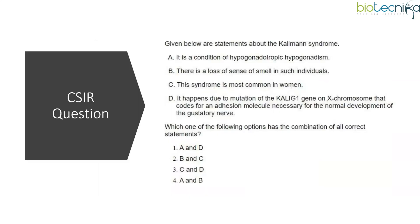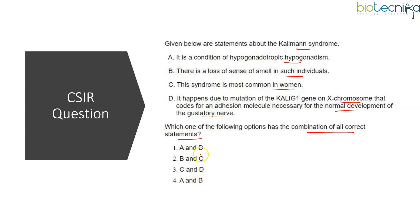We will see one question from each type. The first question is a statement-based question about Kallmann syndrome. They have given some statements about it and we have to identify which are correct. The question asks: given below are statements about Kallmann syndrome — it is a condition of hypogonadotropic hypogonadism; there is a loss of sense of smell; this syndrome is most common in women; it happens due to mutation of KAL1G1 gene on X chromosome that codes for an adhesion molecule necessary for normal development of the gustatory nerve.